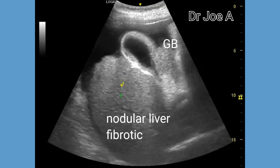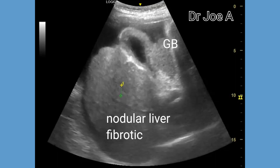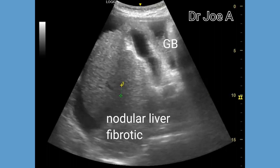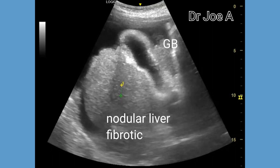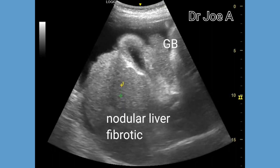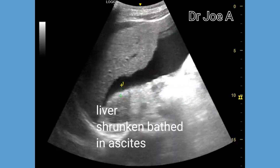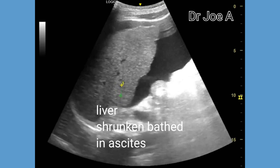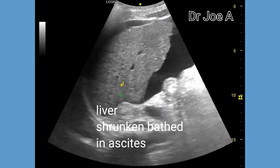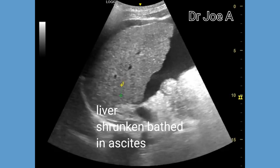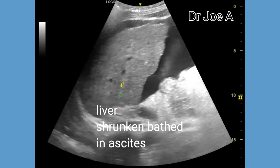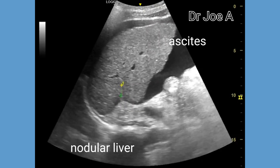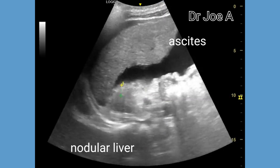The liver and gallbladder are outlined by the ascitic fluid. This appears to be the right lobe with a grossly nodular surface. The liver is almost completely surrounded by ascitic fluid.